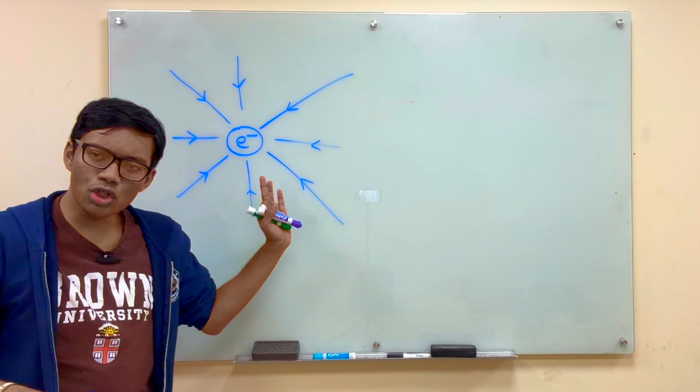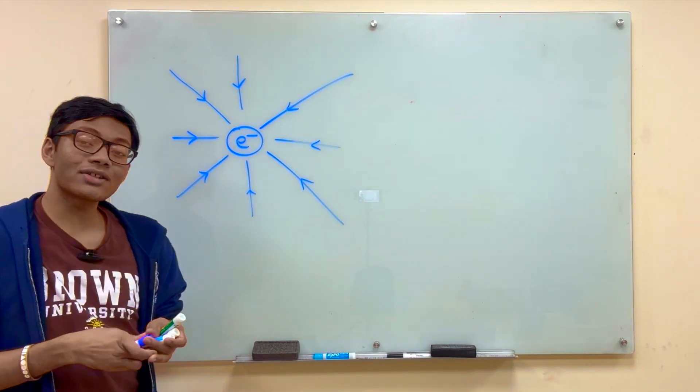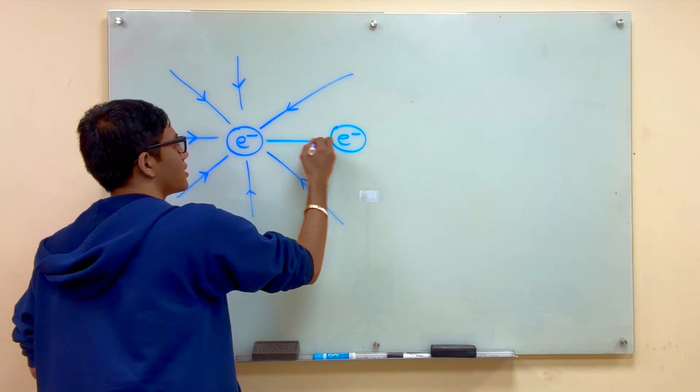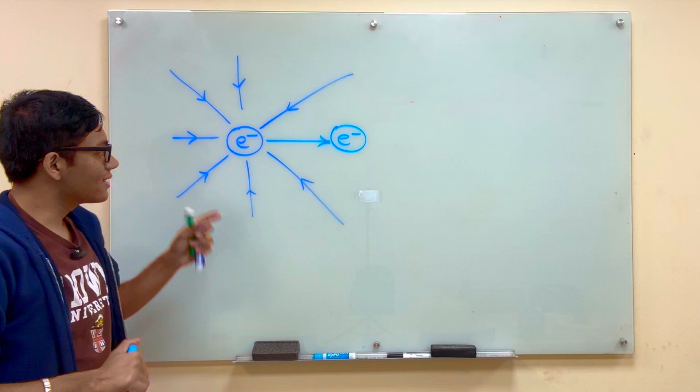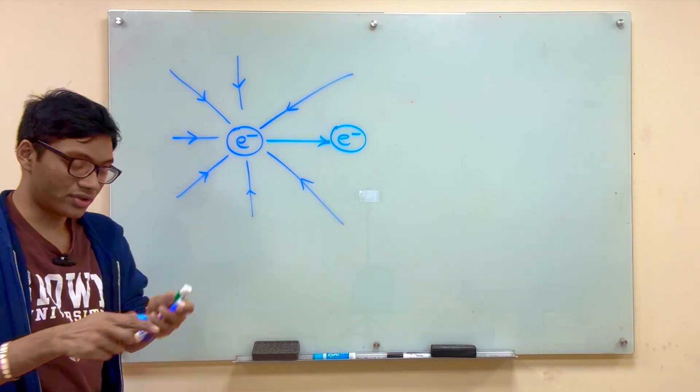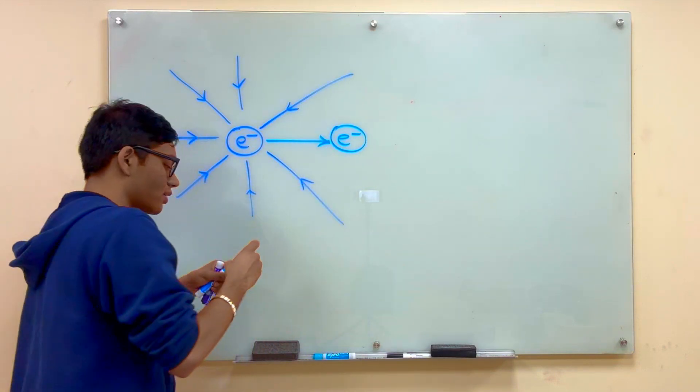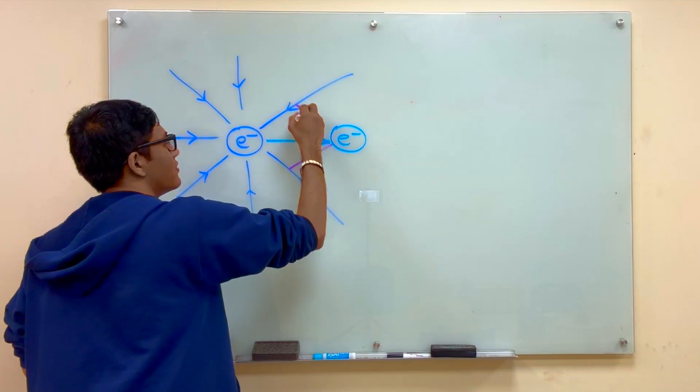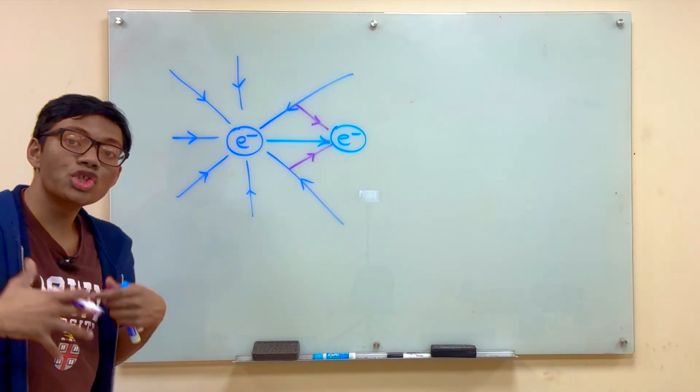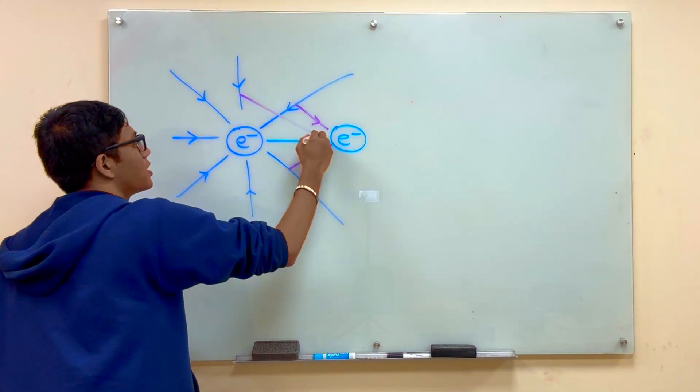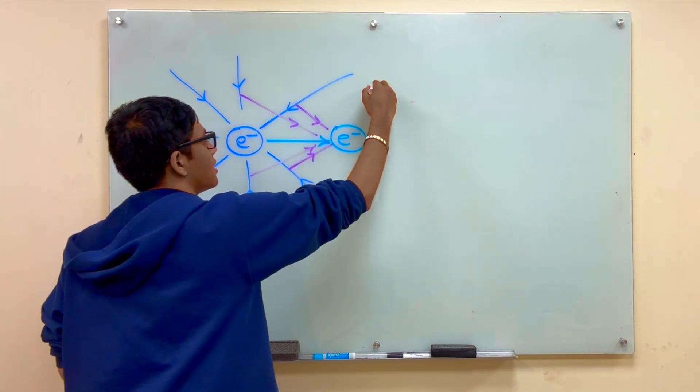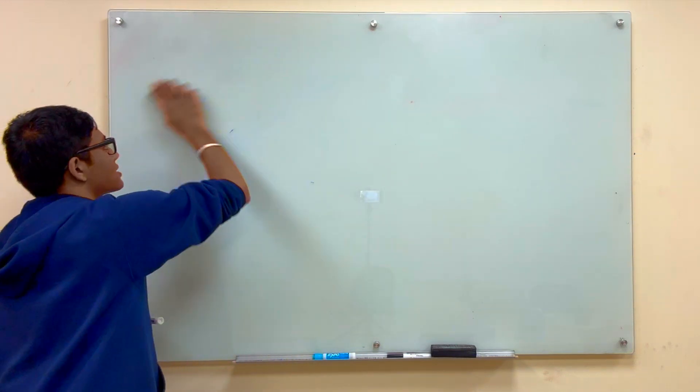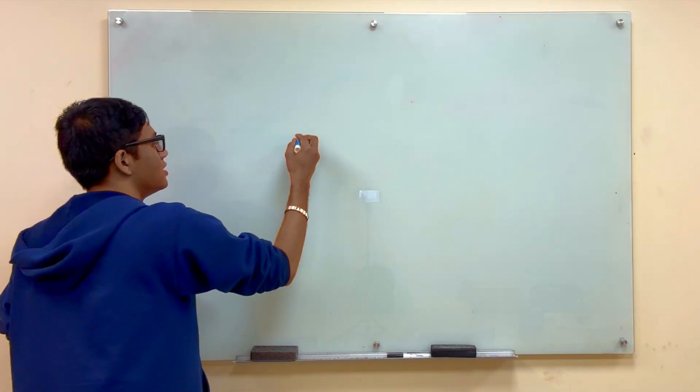What if this electron began to move? Well, if the electron began to move, then the electric field of the electron would have to change. So let's say the electron moved from here to here. Well, in that case, the electric field lines that are closest to the electron would change first. So the closest part of the electric field would deviate first. So here is my electron at its new location.